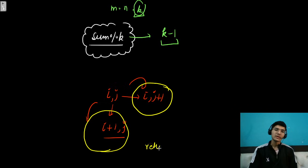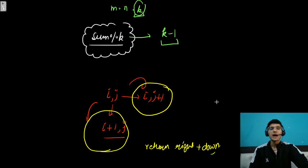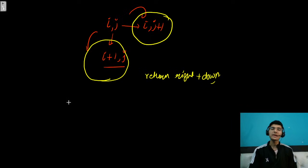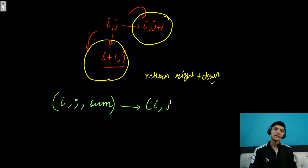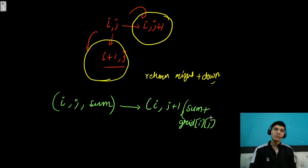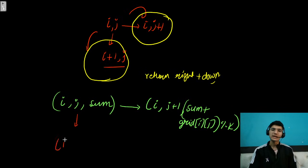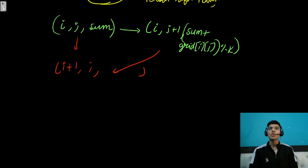The basic intuition is: total = right paths + down paths. We maintain three states: i, j, and sum modulo k. If you go right, the next state is (i, j+1) and the new sum is (sum + grid[i][j]) mod k. If you go down, the next state is (i+1, j) and the sum update is the same. That's the transition — very simple.